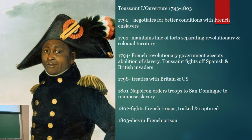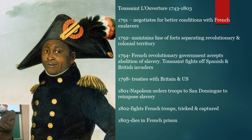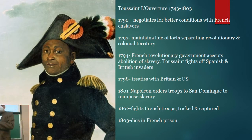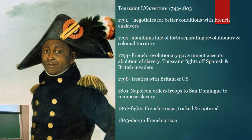In 1794 the French revolutionary government accepts the abolition of slavery. At this point, Toussaint fights off Spanish and British invaders who try to take advantage of the revolution in Saint-Domingue to reestablish slavery and take the valuable colony. In 1798, L'Ouverture signs treaties with both Britain and the U.S. And around 1800, as Napoleon comes to power, he has much larger plans.